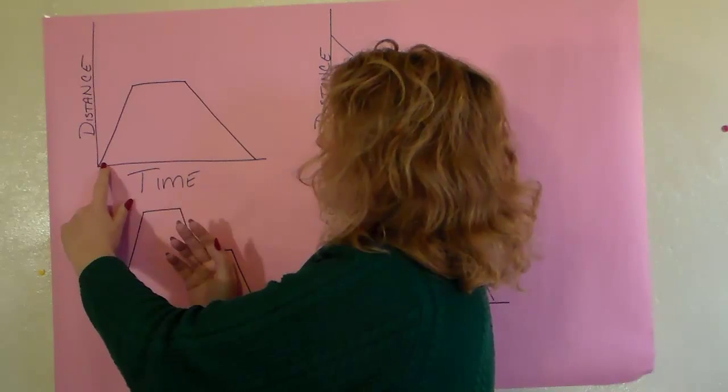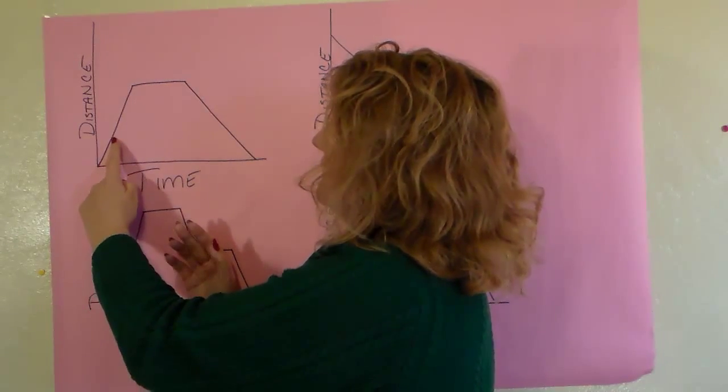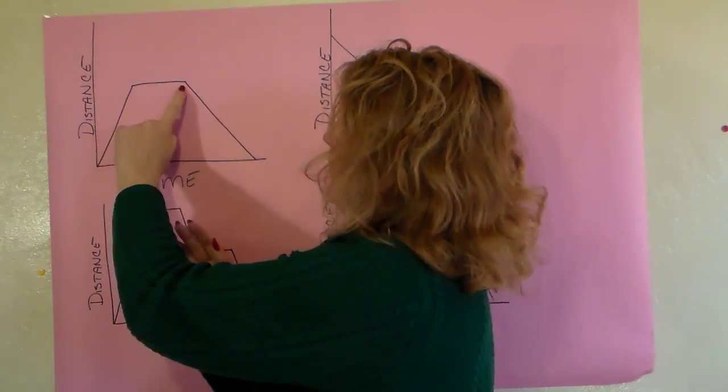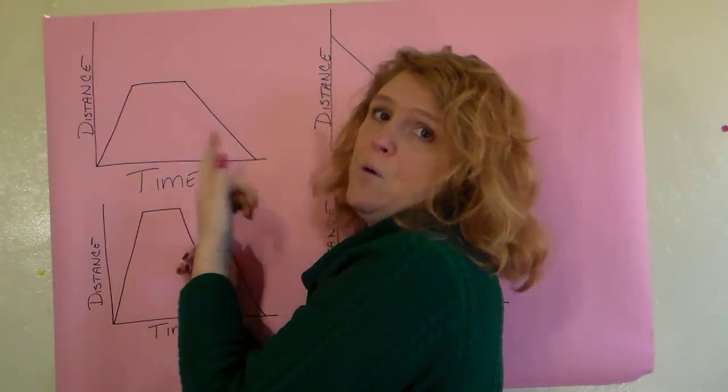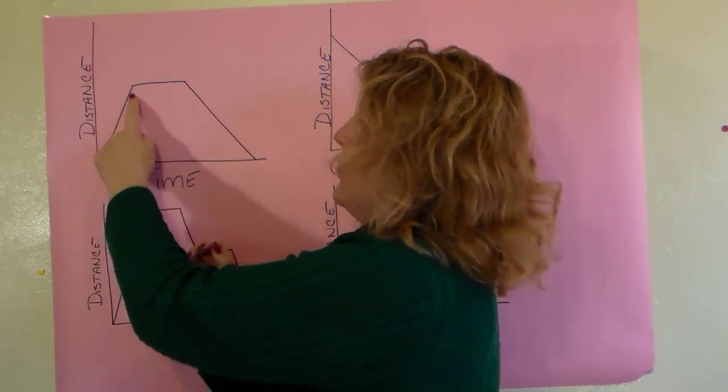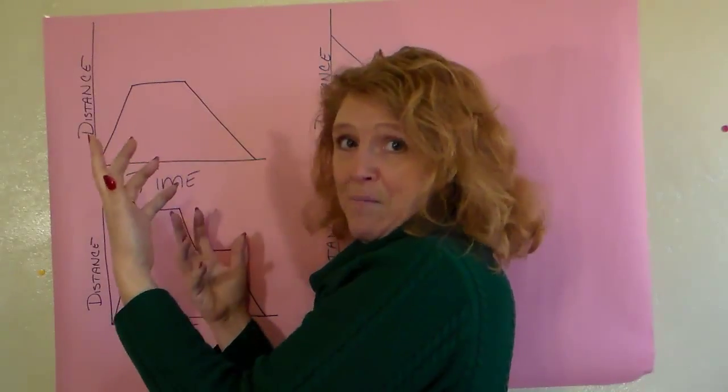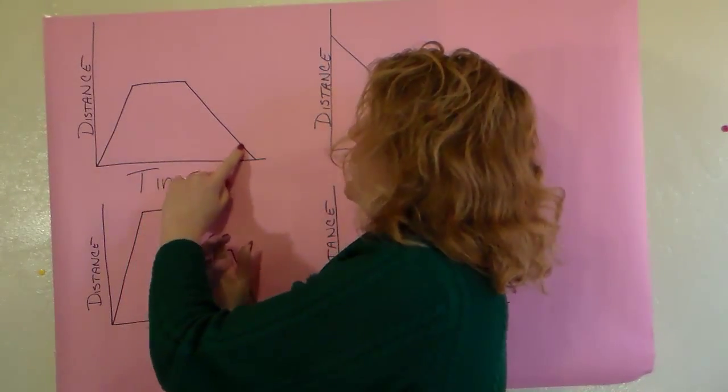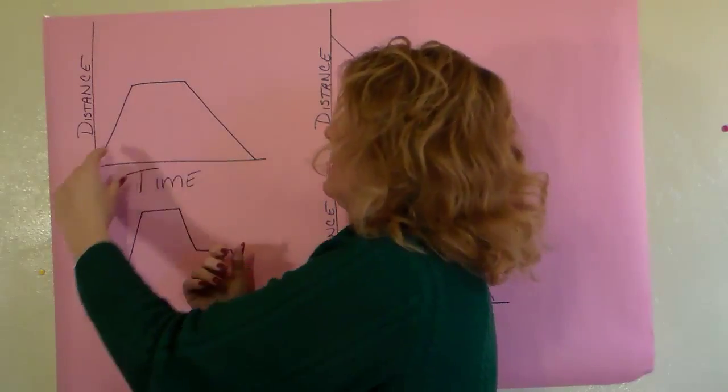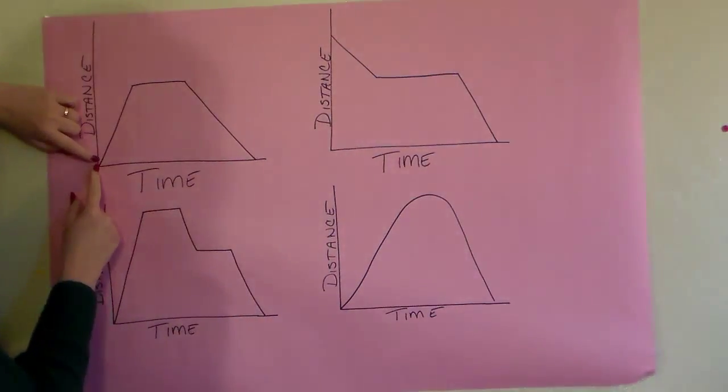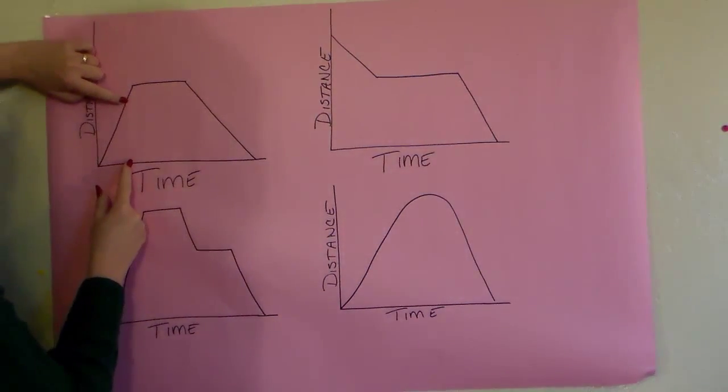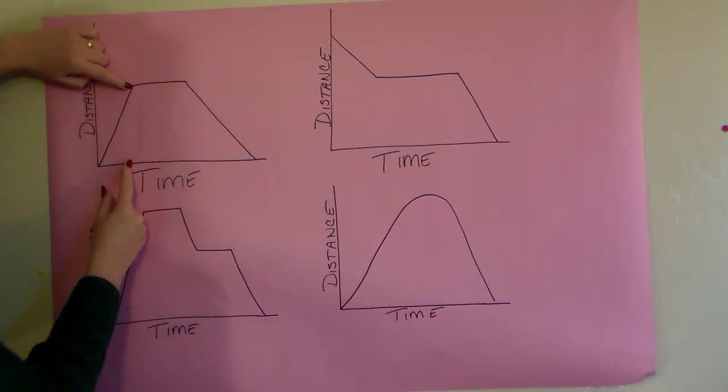So this also shows you, you see how this line is a little bit steeper than this line. So this could be walking to the grocery store because you walked pretty quick. You did all your shopping and then you got all these heavy bags you got to carry back and then carried them back a little bit slower.